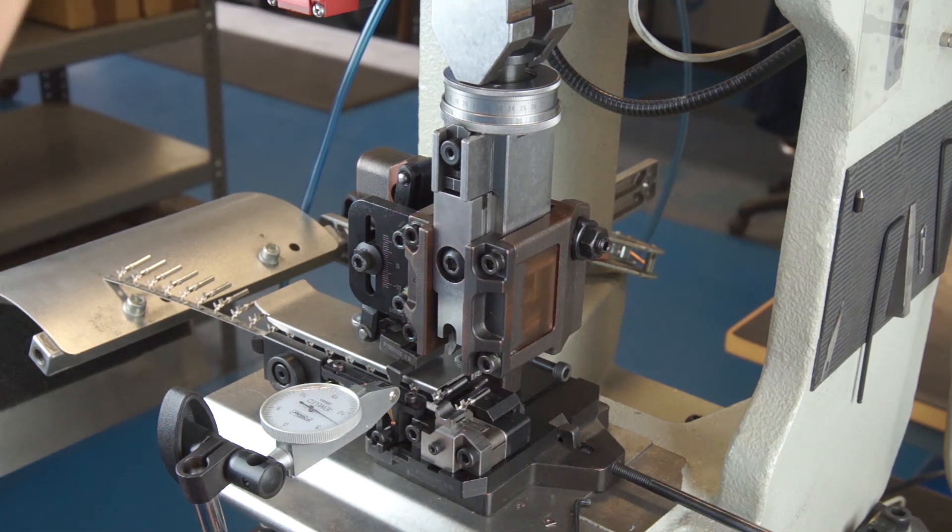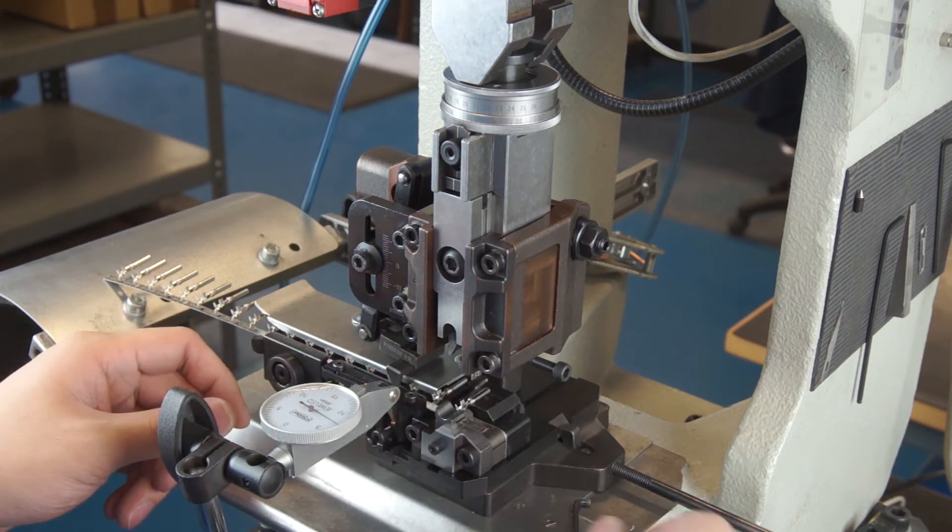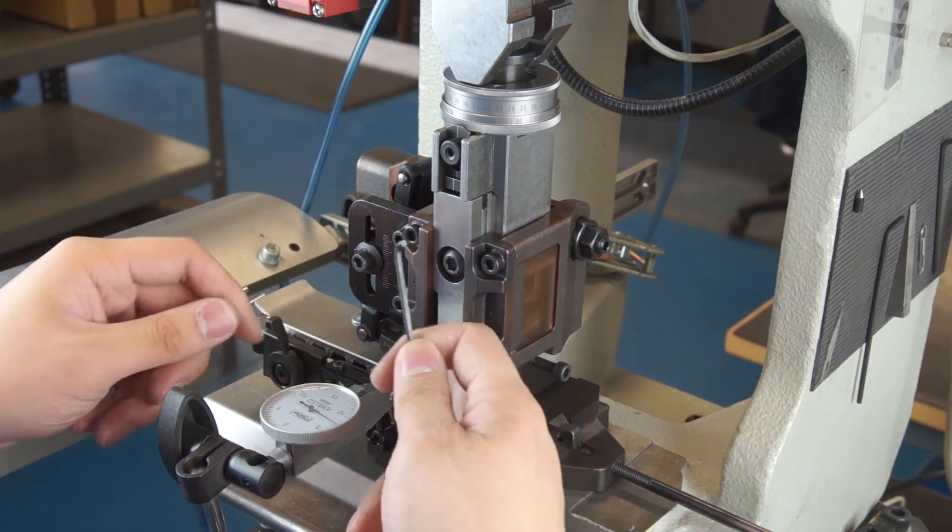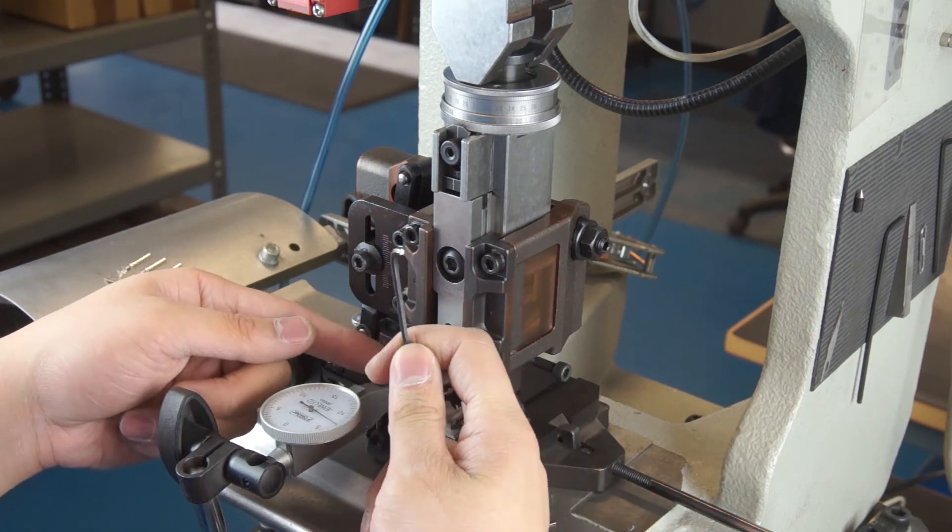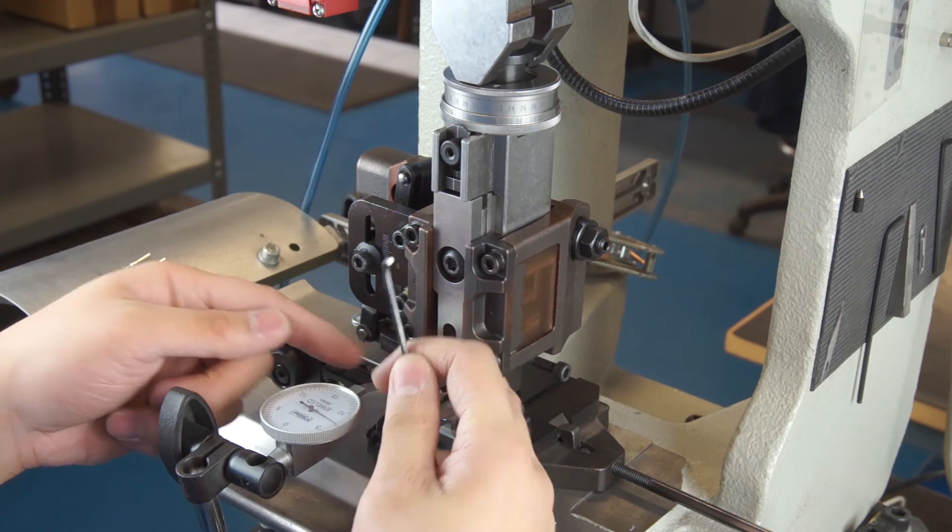Once you have the locking wedge locked back down, the feed finger will need to be re-centered. To do this, visually re-center it in the left guide and tighten the magnet screw, being careful not to move it.